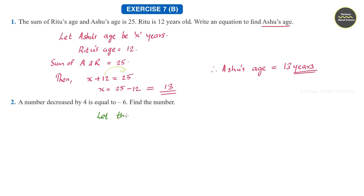Let us assume the number to be N. Then, according to the question, N is decreased by 4. That is N minus 4 is equal to minus 6. We need to find N.